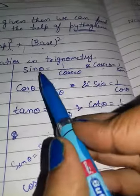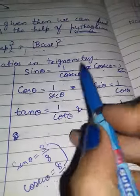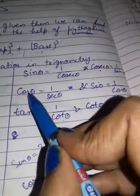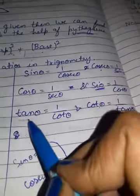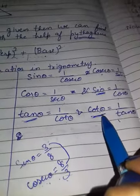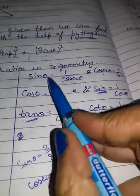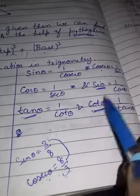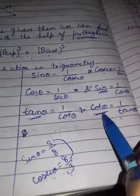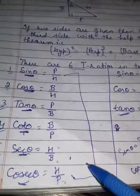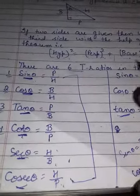I hope you are getting. Sin's reciprocal is cosecant, cos reciprocal is secant, tan's reciprocal is cot. If you know these three, you can find the other three easily.